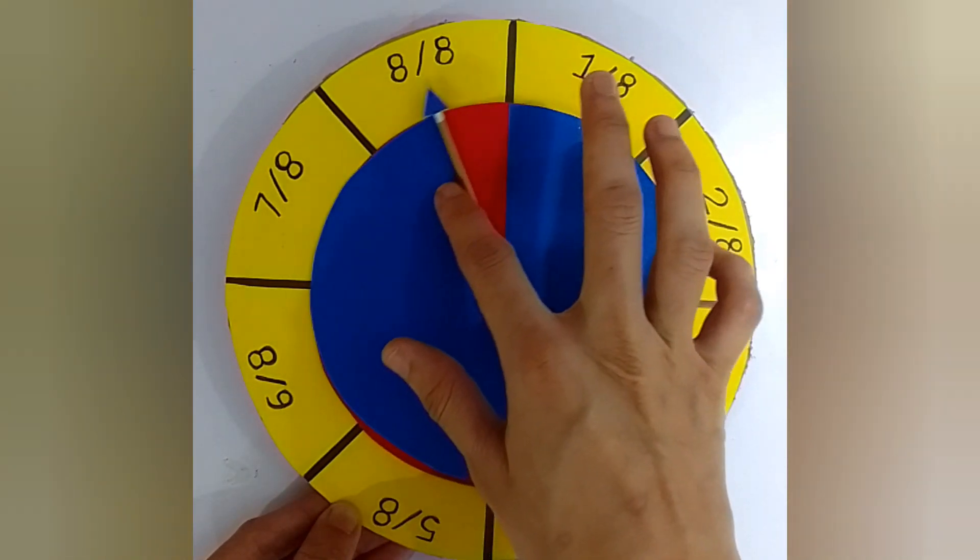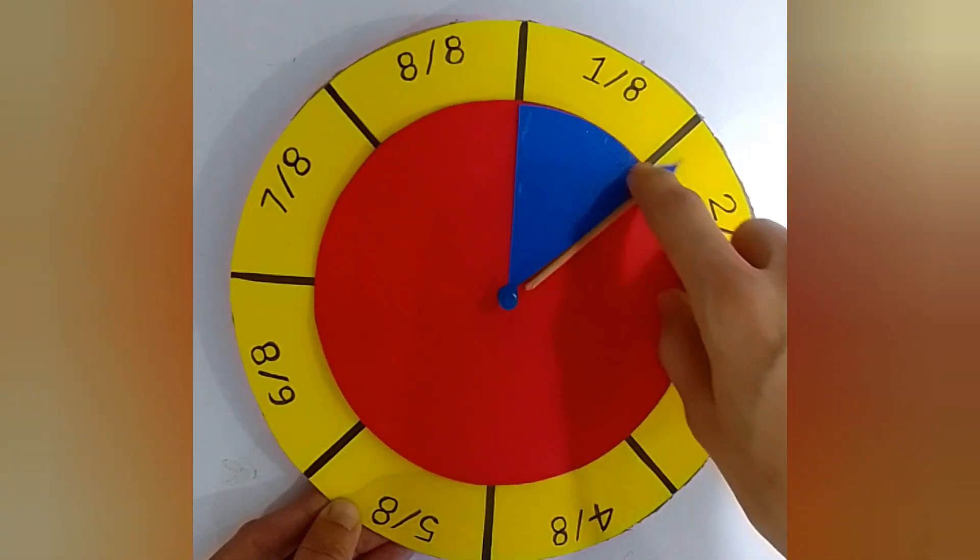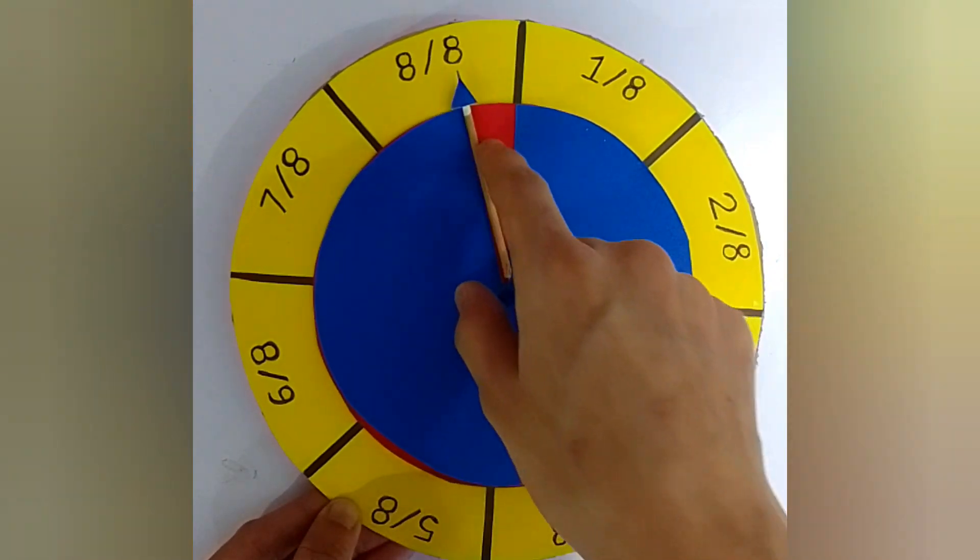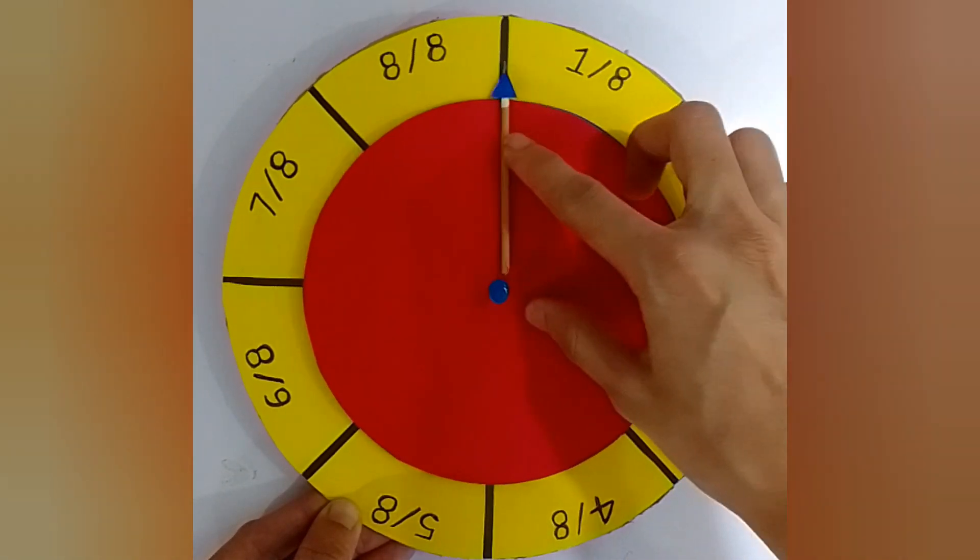A fraction shows us how many parts we have out of the total. So 1 by 8, 2 by 8, 3 by 8, and when you eat all 8 pieces, it's 8 by 8, meaning the whole thing.